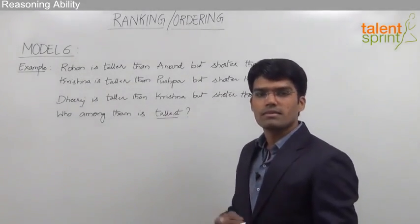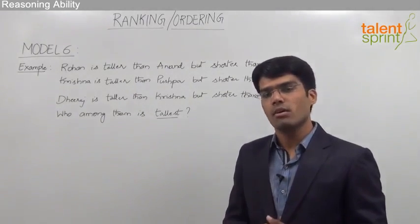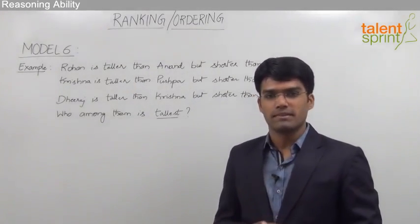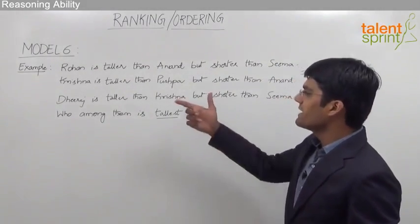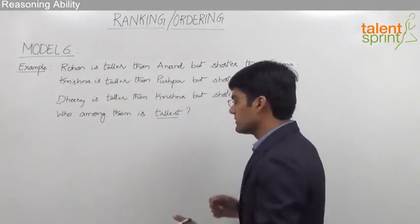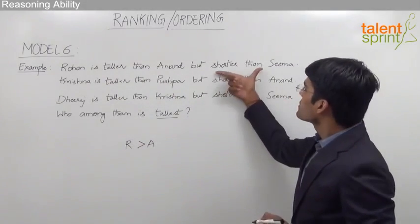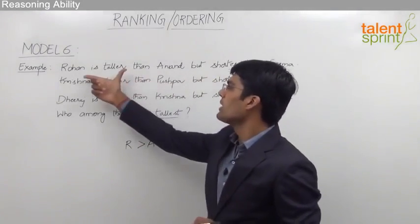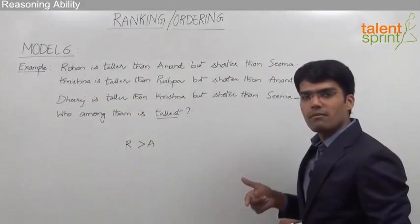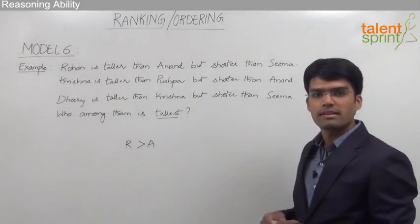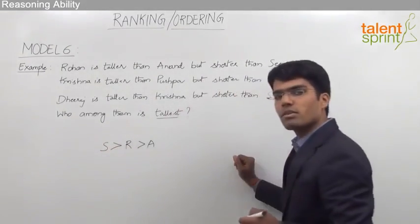To solve this question and find out the tallest person, we need to make the ascending or descending order of heights by reading out these statements. The first statement says Rohan is taller than Anand, so R > A, but shorter than Sima. That means Sima is taller than Rohan, which can be integrated into the statement as: Sima is taller than Rohan, who is taller than Anand.